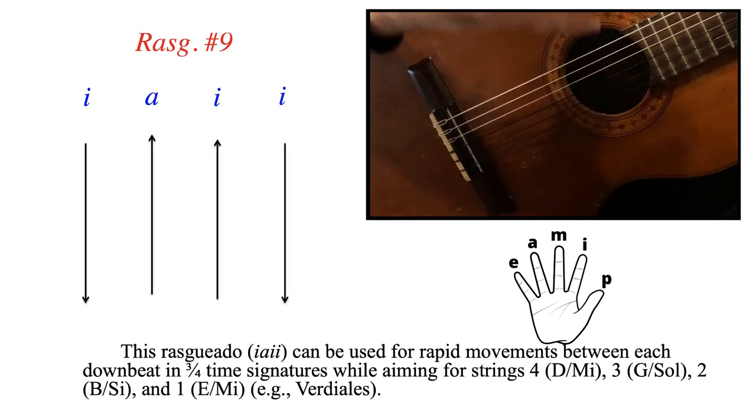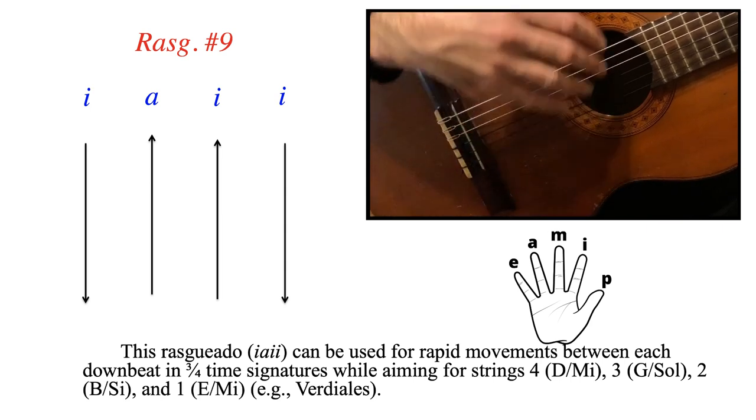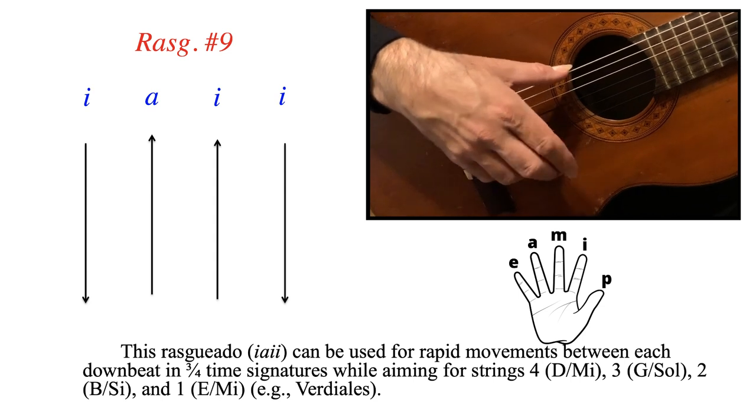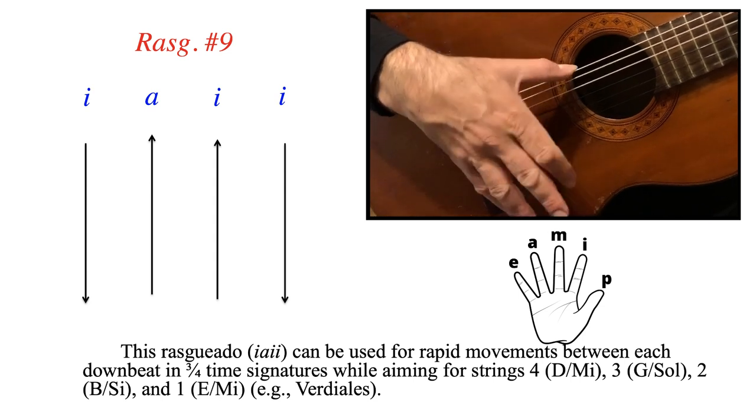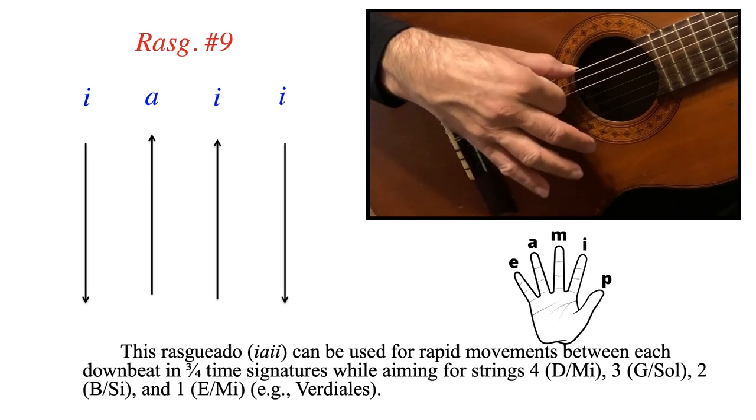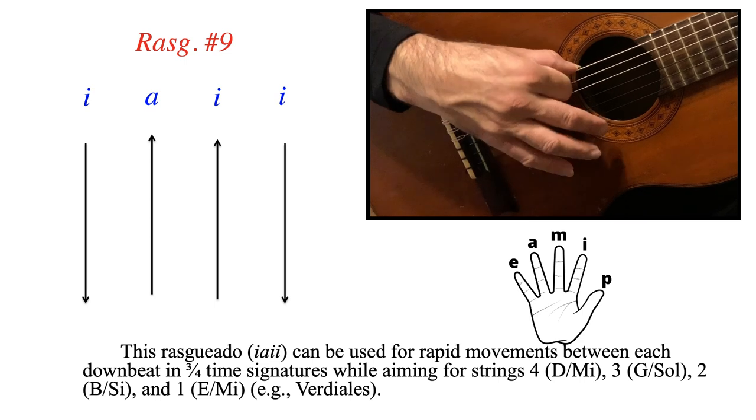Now rasqueado number 9. Like I said, it could be used in combination with number 8. But by its own merit, it's a great one to have in your toolbox. So how does it go? Upward I, downward A, downward I, and upward I. Once again, I, A, I, I. That's up, down, down, up.